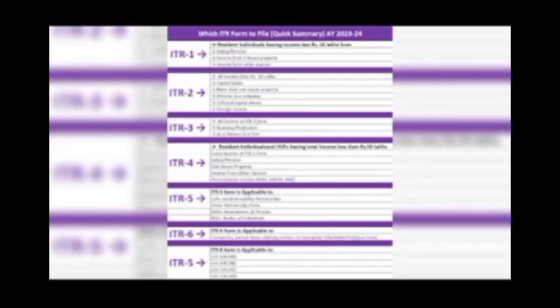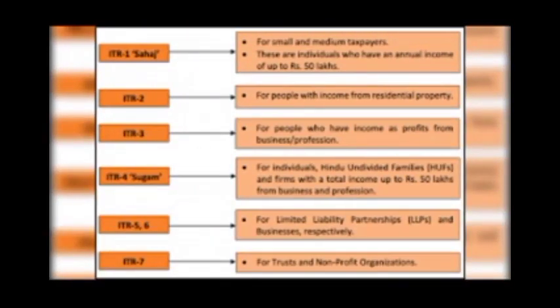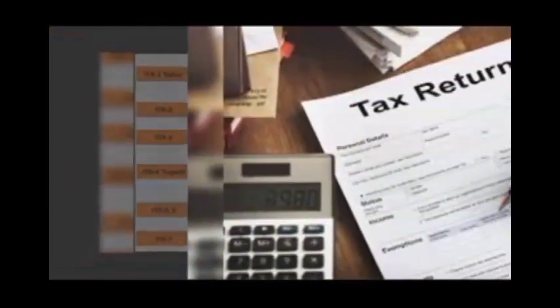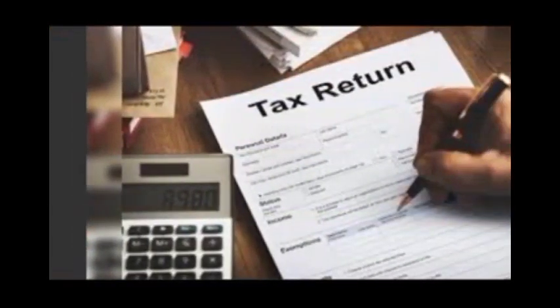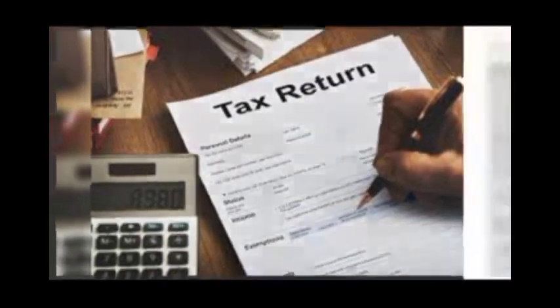ITR 5 is for firms, investment funds, business trusts, estates, and companies. ITR 6 is for all companies registered under the Companies Act of 1956. ITR 7 is for all charitable trusts, regional trusts, political parties, and scientific research institutes.